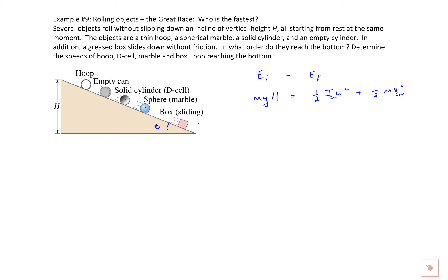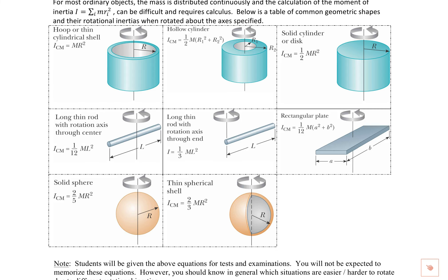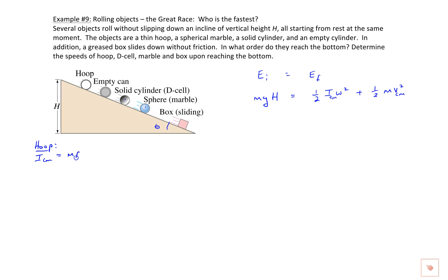Let's solve an example — just the hoop. The hoop has a rotational inertia we can look up in the notes or a provided chart. Looking at the chart, the thin hoop has a rotational inertia of mr². So I equals mr².